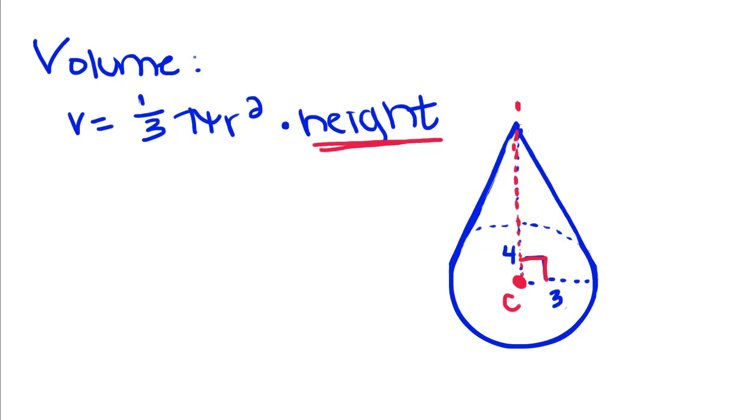Okay, so to solve the volume of this cone, we're going to take one-third pi r, which is 3 squared, times our height, which is 4.